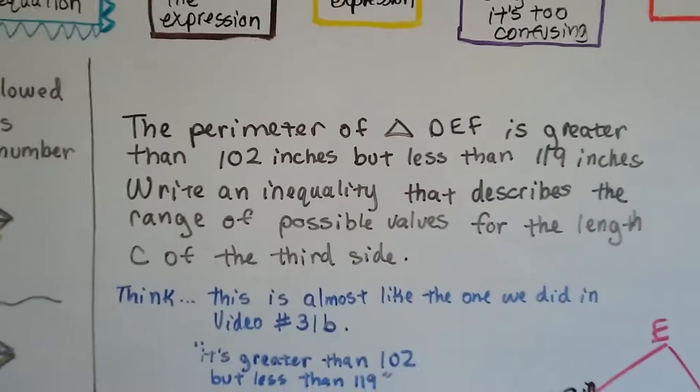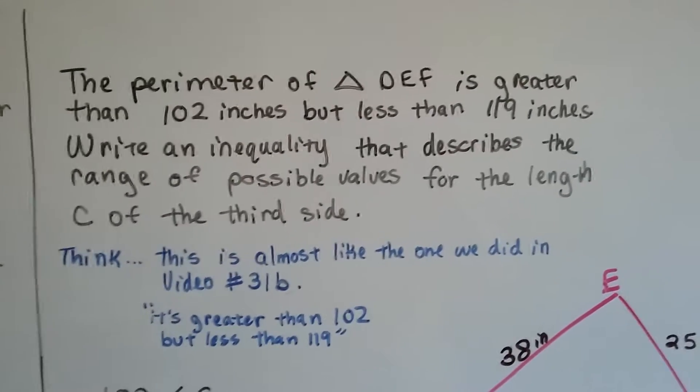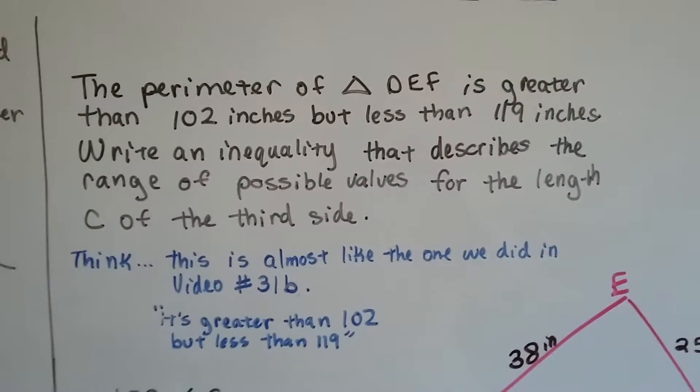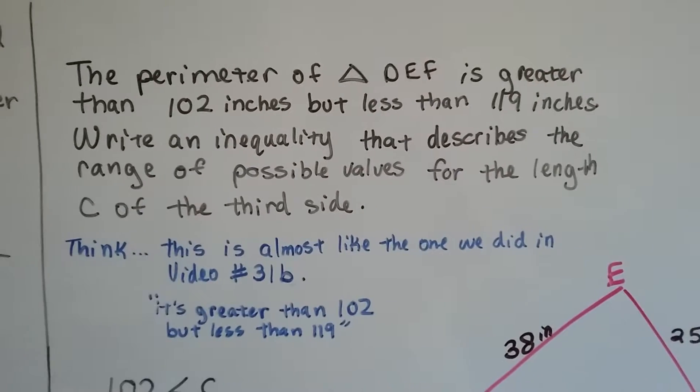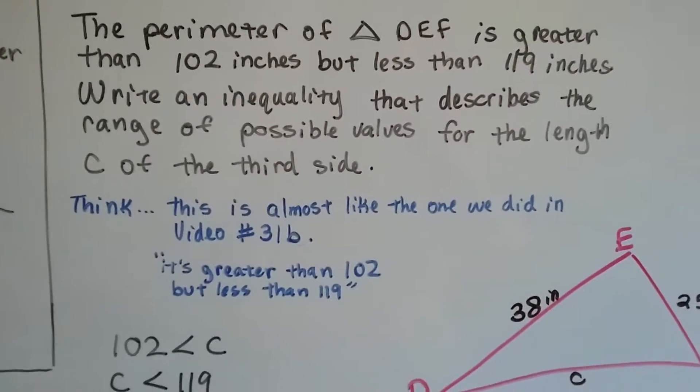The perimeter of triangle DEF is greater than 102 inches, but less than 119 inches. Write an inequality that describes the range of possible values for the length C of the third side.